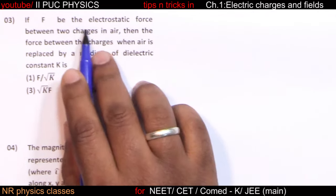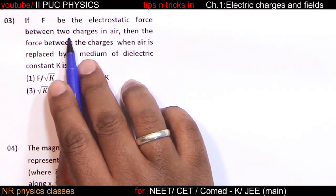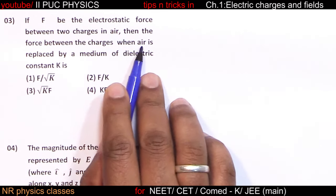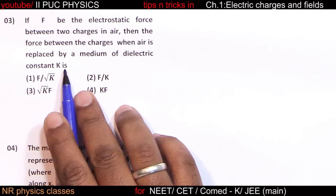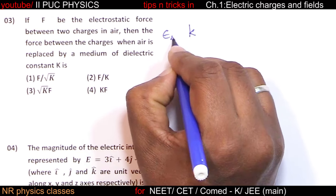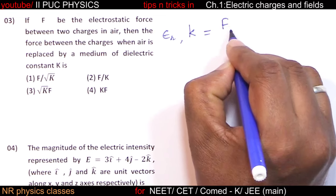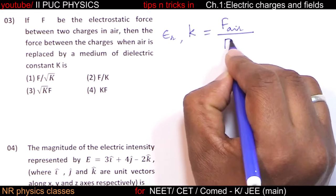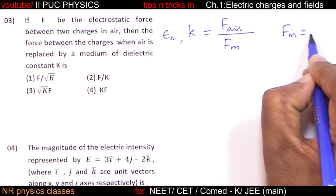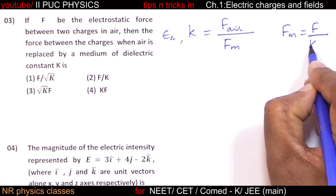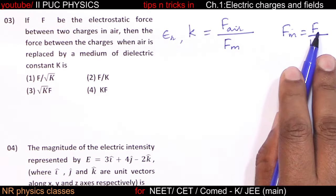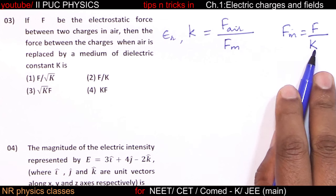If F is the electrostatic force between two charges in air, then when air is replaced by a medium of dielectric constant K (or epsilon R), the ratio of force in air to force in medium equals K. Therefore, force in medium equals force in air divided by K.